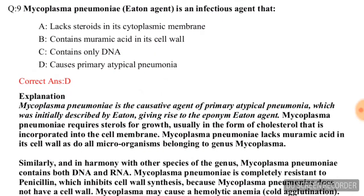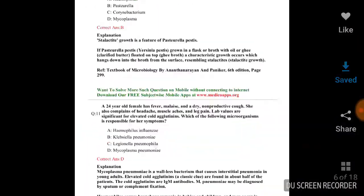Next question: mycoplasma pneumonia is an infectious agent that — A) lacks sterols in its cytoplasmic membrane, B) contains muramic acid in its cell wall, C) contains only DNA, D) causes primary atypical pneumonia. The correct answer is D — causes primary atypical pneumonia.